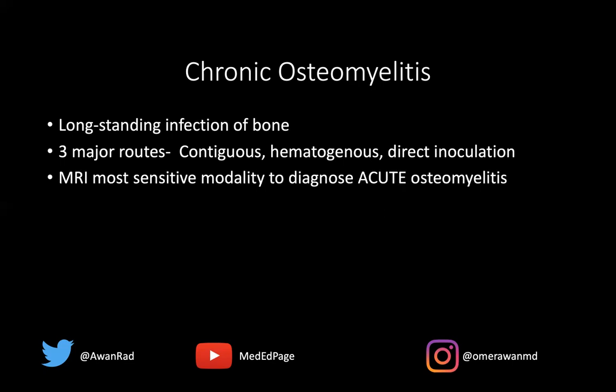MRI is by far the most sensitive modality to diagnose acute osteomyelitis. We know that plain films lag behind by anywhere from 7 to 21 days in showing acute osteomyelitis. There's often a debate between T1 versus T2. T2 is more sensitive for the diagnosis of osteomyelitis, because of the bone marrow demonstrating T2 hyperintense or bright signal. But T1 is more specific, because when you have confluent dark signal that replaces the normal fatty bright marrow, that's specific for the diagnosis of osteomyelitis. On T1, the bone is often bright and fatty, but when you have dark signal replacing that marrow, that is suggestive of chronic osteomyelitis in the setting of infection.